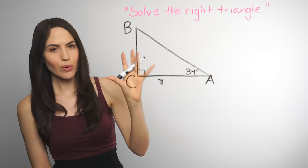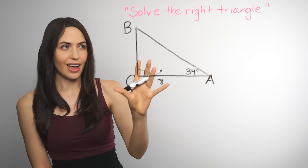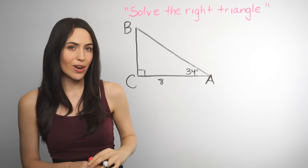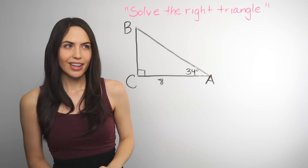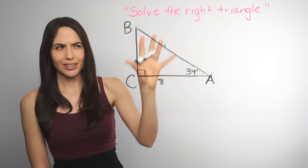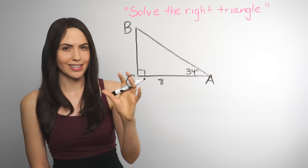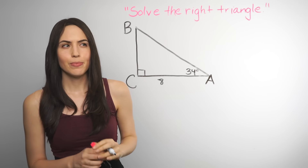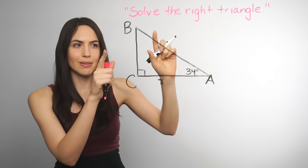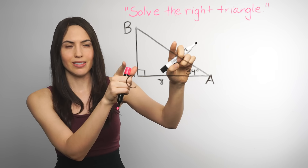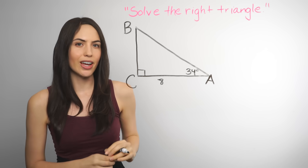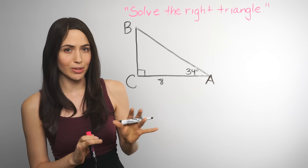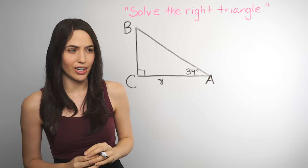Say you have a right triangle and you're supposed to solve that right triangle. It's a little vague as to what that means. It just means find any missing sides or angles that are not already labeled on your right triangle.